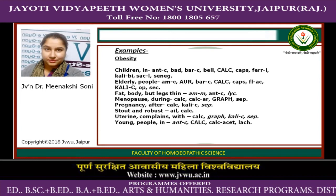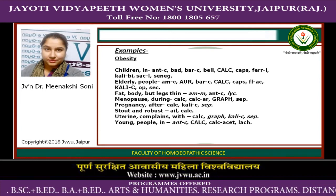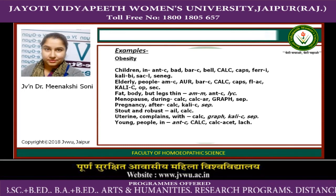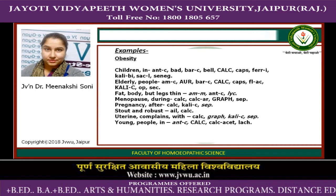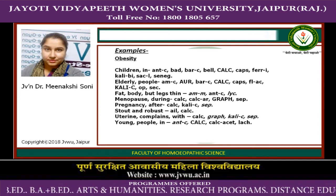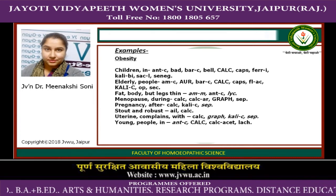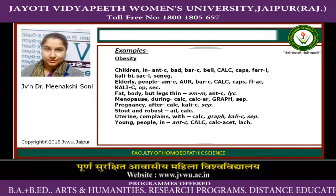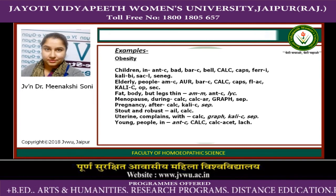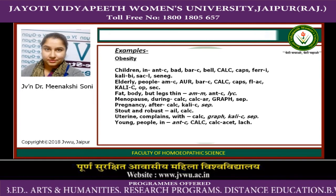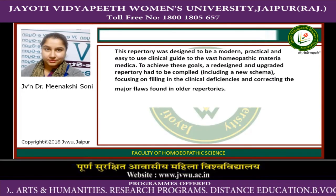For menopausal women with obesity, we can prescribe Graphites, Sepia, or Calcarea Arsenicosa — the best medicines for menopausal women. For obesity after pregnancy, Calcarea Carb and Sepia can be prescribed. For obesity with uterine complaints, Calcarea, Graphites, and Calcarea Carb are the best medicines. For obesity in young people, Calcarea Carb and Lycopodium are the best medicines.